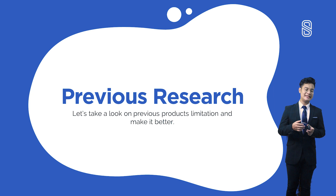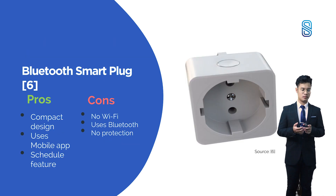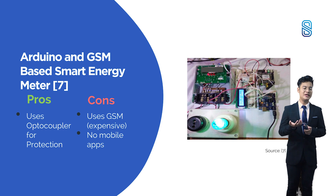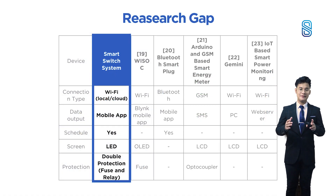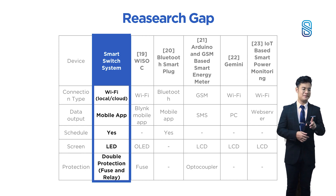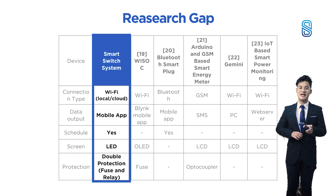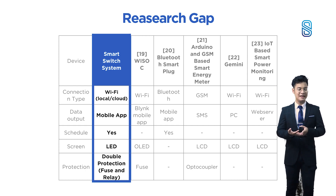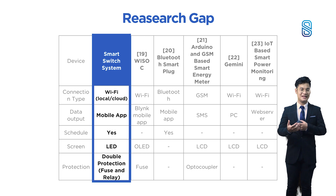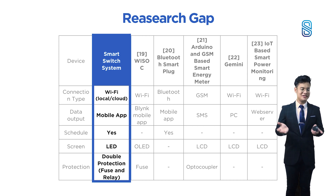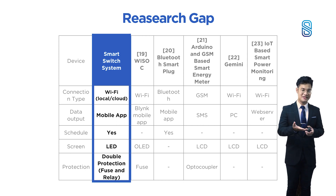Next, previous research — we need to see previous limitations and improve upon them. The systems reviewed include YSOP, a Bluetooth smart plug, an Arduino and GSM-based smart energy meter, and the commercial product Gemini. From all previous research I've combined and summarized into a comparison table. The blue row is my system, the smart switch system. The connection type is the best — we use low-cost and low-latency Wi-Fi. The data output uses a mobile app because people use their phones 24 hours a day. We also added a schedule feature that most previous systems lacked.